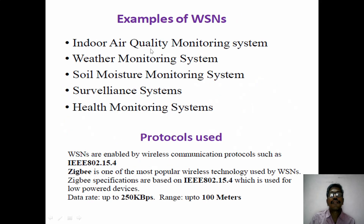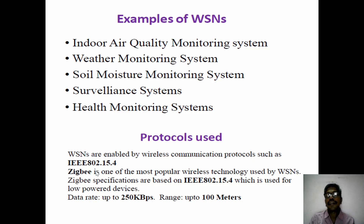Examples of wireless sensor networks include indoor air quality systems, weather monitoring, soil moisture monitoring systems, surveillance systems, and health monitoring systems. In wireless sensor networks, Zigbee is the communication protocol mostly preferred for data transfer from node to node. It can cover up to 100 meters with a data rate of 250 kilobytes per second.